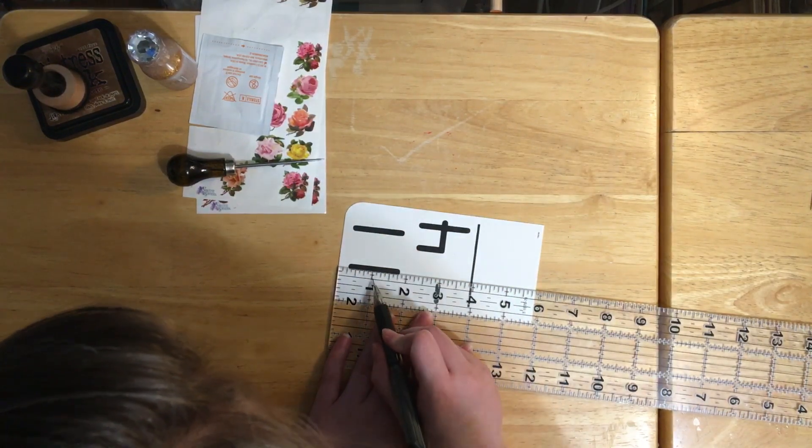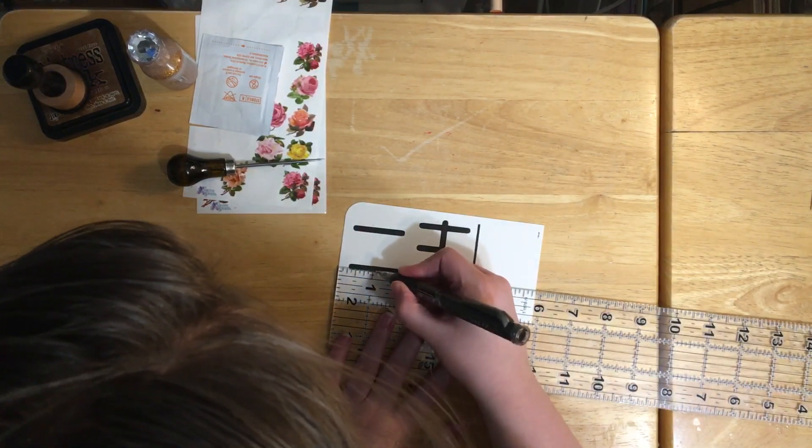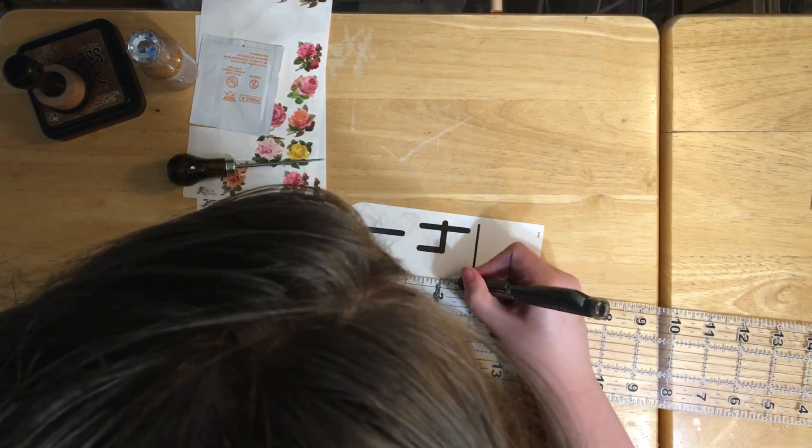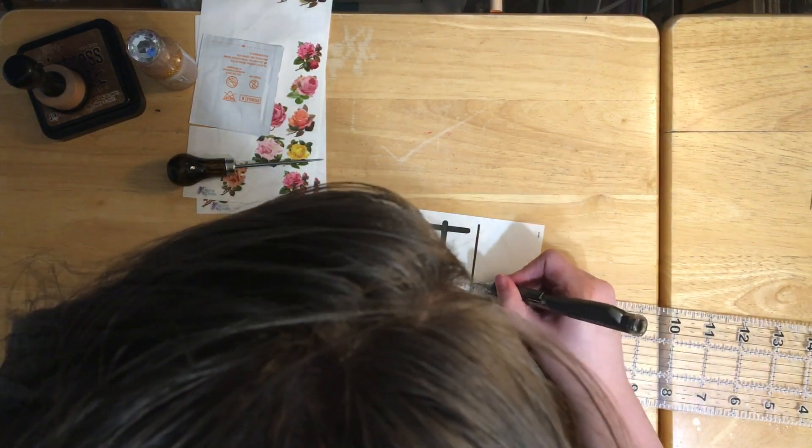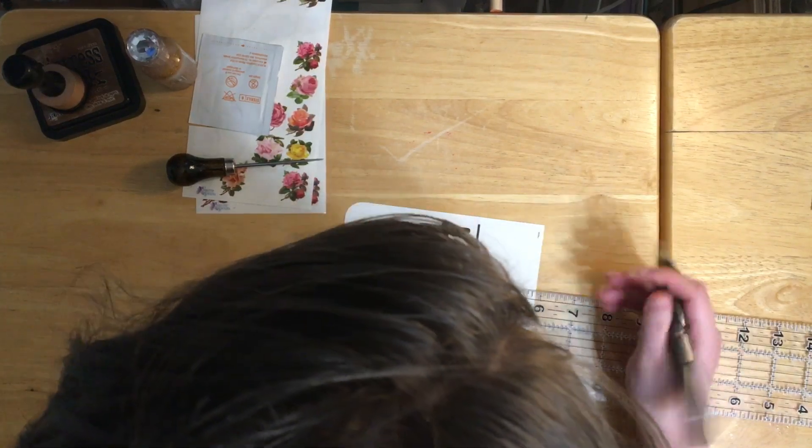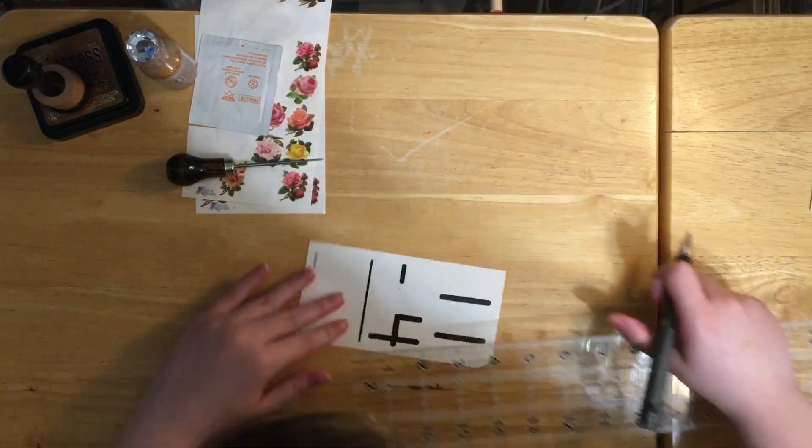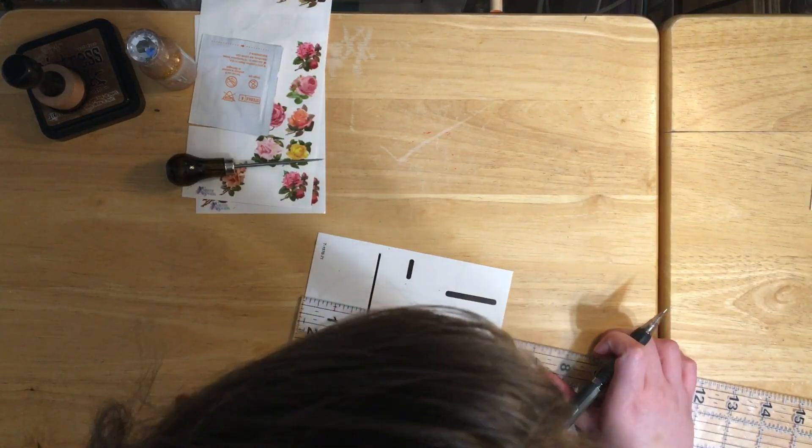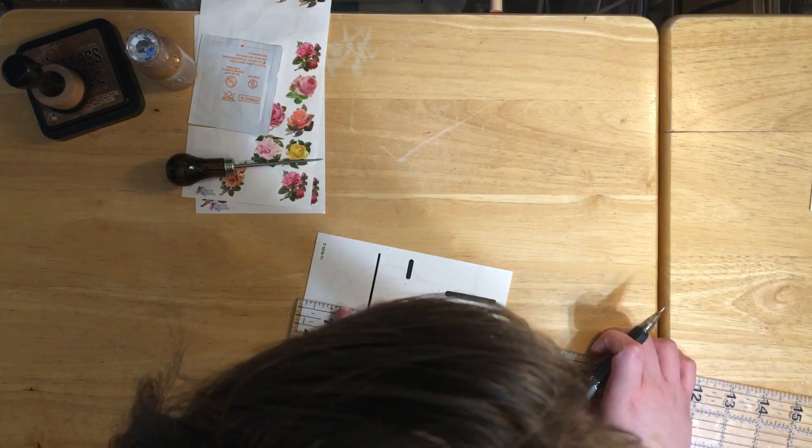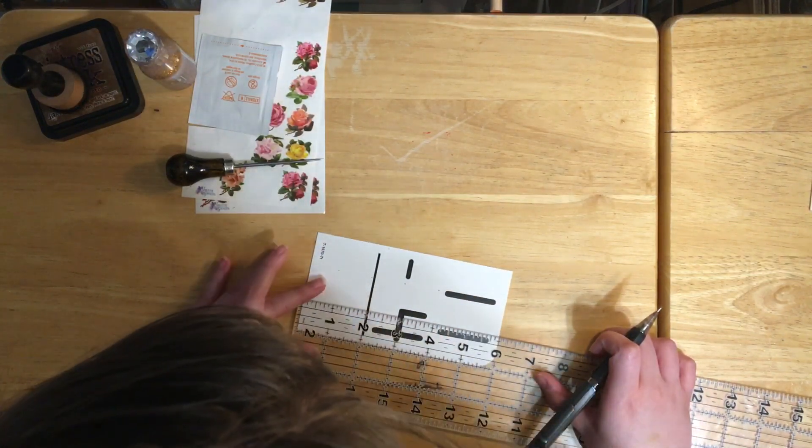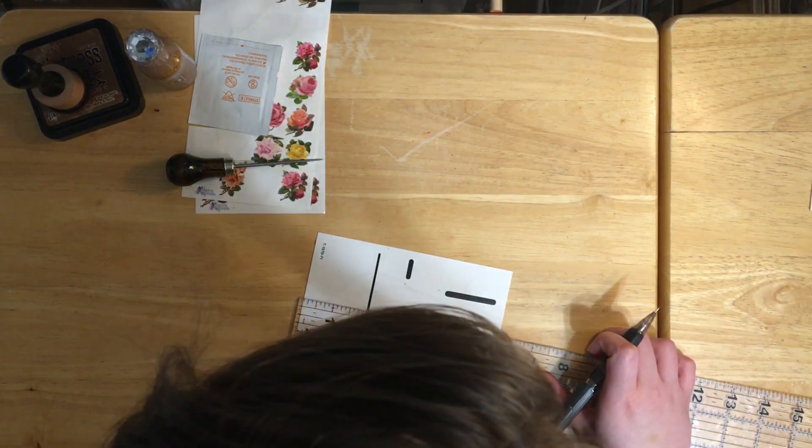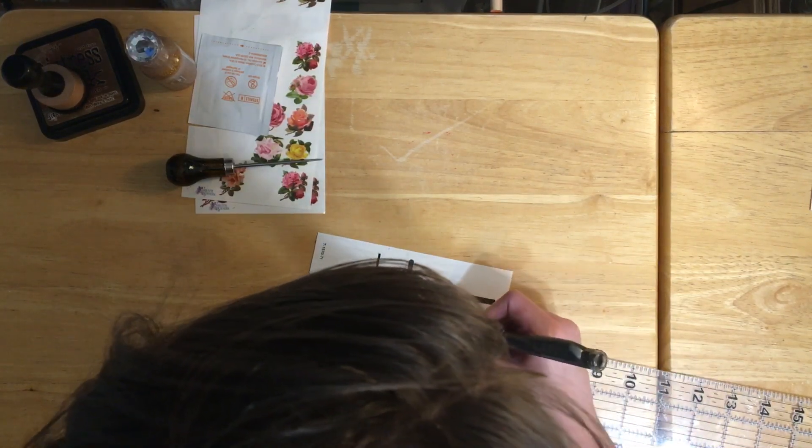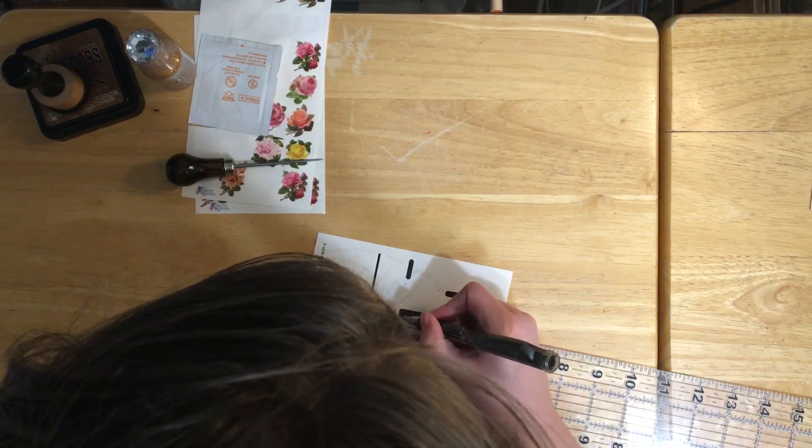My card is three inches wide, so I'm marking at each inch - one, two, three, four, and five. Then I'm gonna flip it over and do the same thing on the other side.